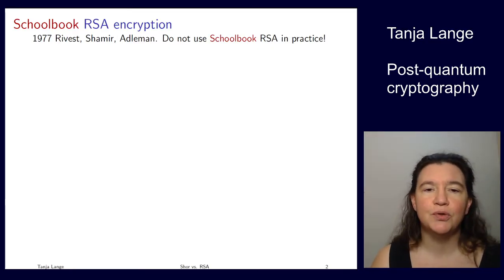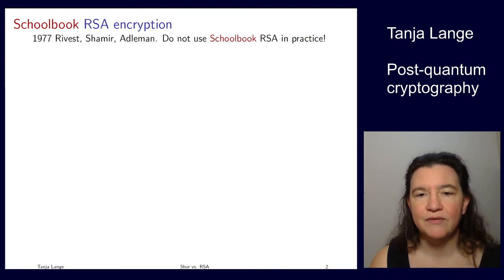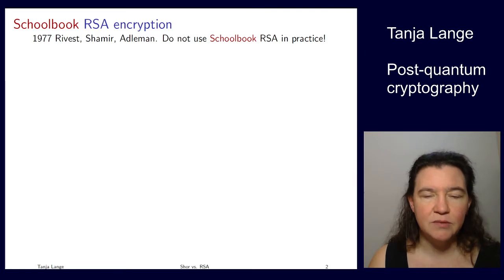In this lecture we are going to look into how Shor's algorithm breaks RSA. Now RSA is the first public key cryptosystem which was fully specified and it goes back to 1977 to Rivest, Shamir, and Adleman, where they showed how to use factorization as a basis for building a cryptosystem.